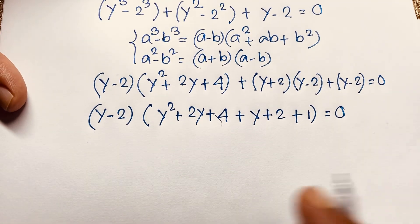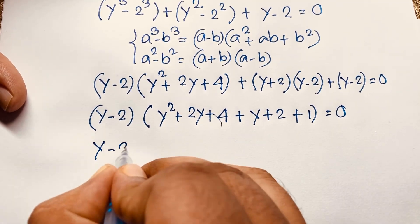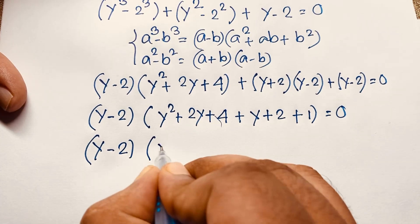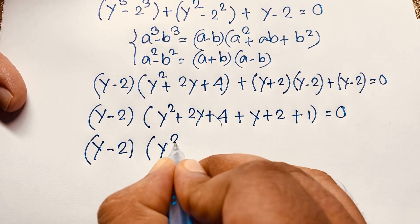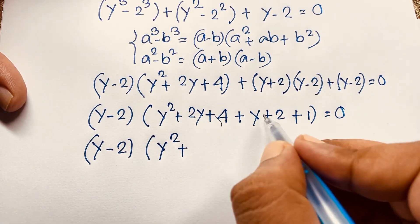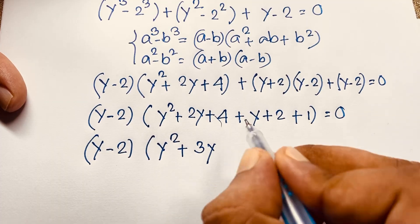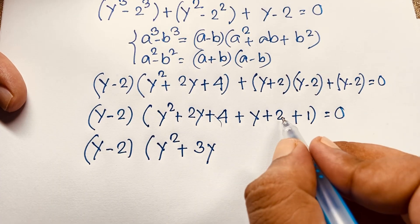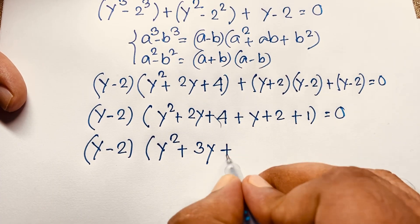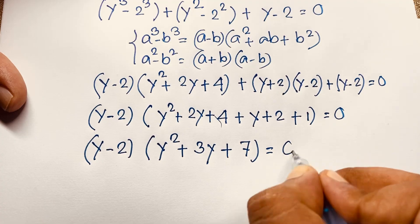Combining terms inside the bracket: y² + 2y + y = y² + 3y, and 4 + 2 + 1 = 7. So we get (y - 2)(y² + 3y + 7) = 0.